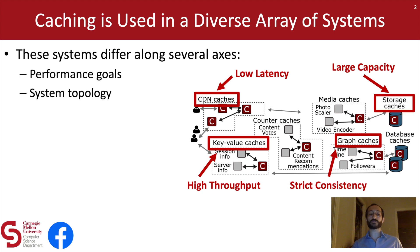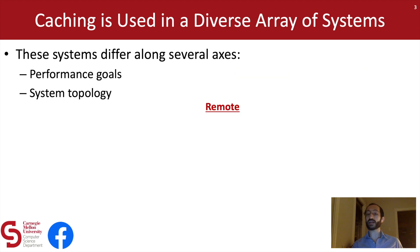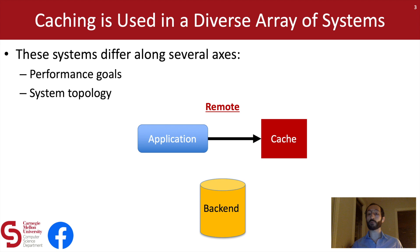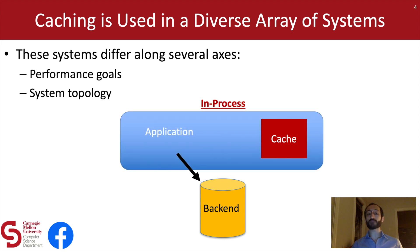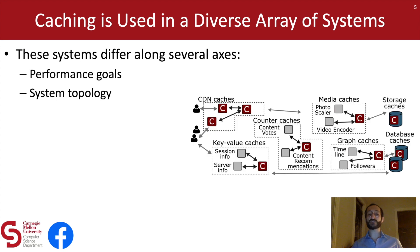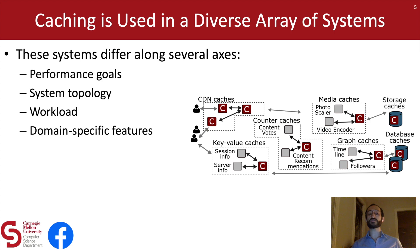Key-value caches are shared by many users and thus require high throughput. And social graph caches require strict consistency to ensure that updates to the social graph are observed in a timely manner. These systems also differ in terms of system topology — some of these caches are remote caches, where an application sends a remote procedure call to a cache and looks up any missing data from a back end. And for performance reasons, some of these are in-process caches, where the cache is actually part of the application process. Because of the diversity of these use cases, these systems also differ in terms of their workload, which we know can have massive impacts on cache performance.